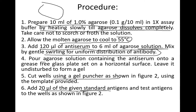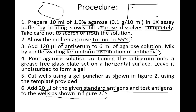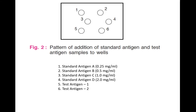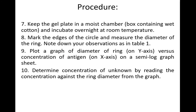After the gel solidifies, punch in the wells and add 20 microliters of the given standard antigens as well as test antigens to each well as shown in the figure. There are four standard antigens with known concentrations labeled 1, 2, 3, and 4, and two unknown concentration test samples labeled 5 and 6.